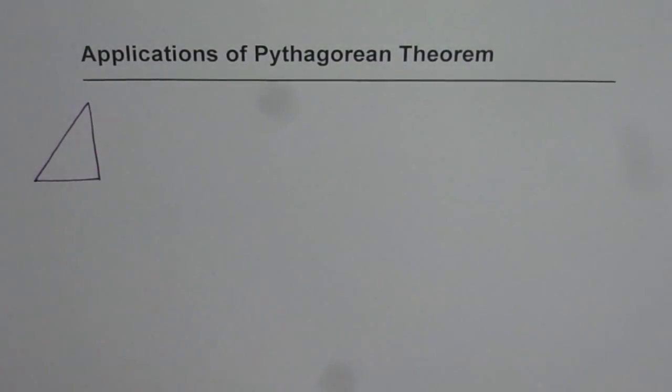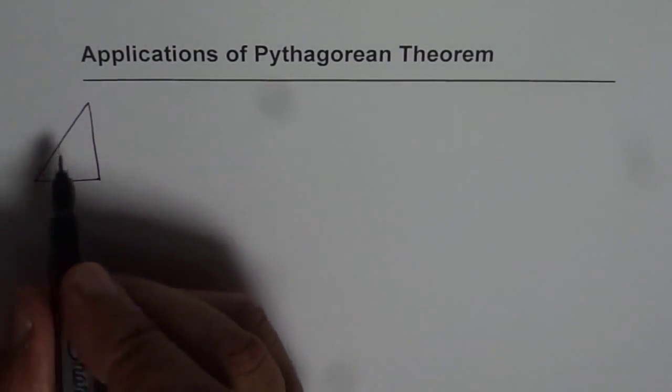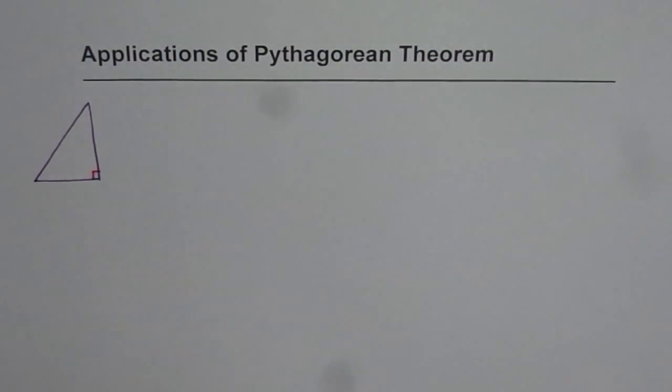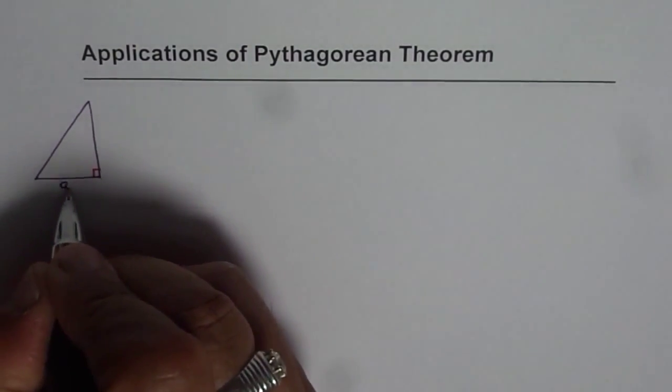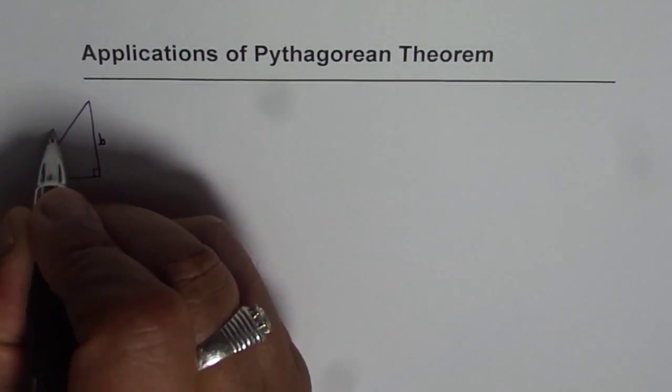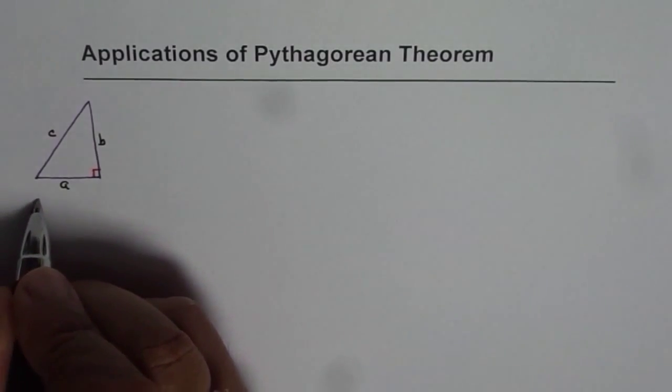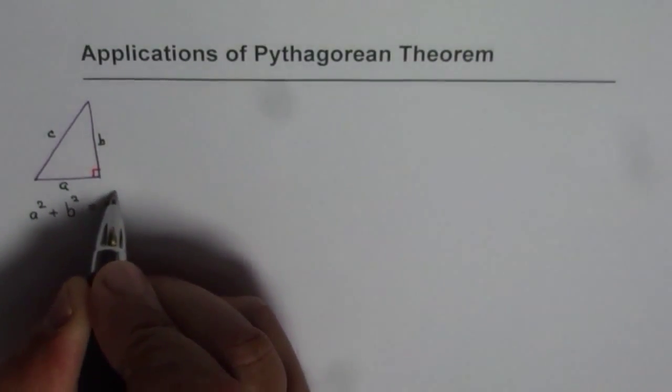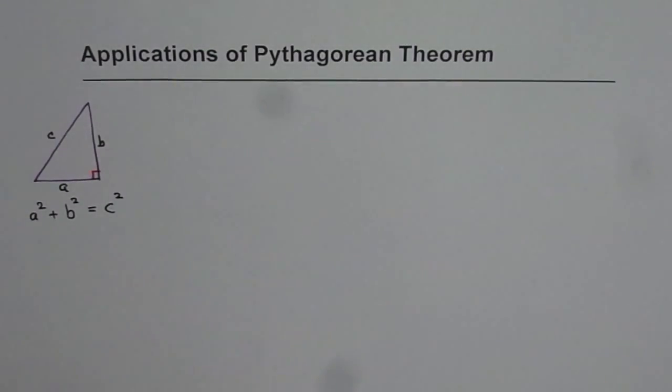Pythagorean theorem is applied in any right triangle. Let us say we have a triangle which has a 90 degree angle, so it is a right triangle. Now if the sides of this triangle are a, b and c, then a² + b² = c². That is Pythagorean theorem.